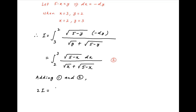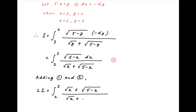Now adding equations 1 and 2, we get 2I equal to the integral from 2 to 3 of square root of x plus square root of (5 minus x) in the numerator, and the denominator is square root of x plus square root of (5 minus x). The numerator and denominator are identical, therefore they cancel.